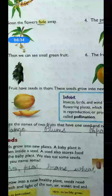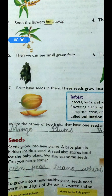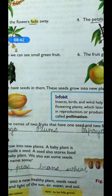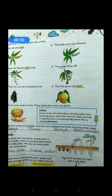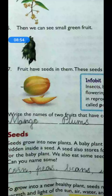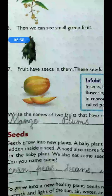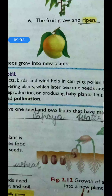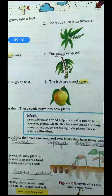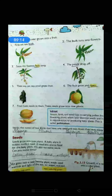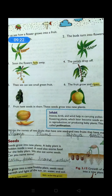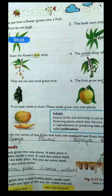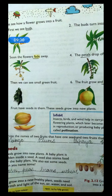But you need proper conditions: proper air, sunlight, and water. With these proper conditions, you can definitely get a new plant. So children, write the names of two fruits that have one seed and two fruits that have many seeds. For one seed: mango, which is the king of fruits, and plums — mostly in the rainy season we get plums, jamun. For many seeds: papaya, watermelon, and guava — you will get many seeds. So this is the procedure: buds form into flowers, then flowers fade, then petals drop, then we see a small fruit, this fruit grows and ripens, and we get the fruit.